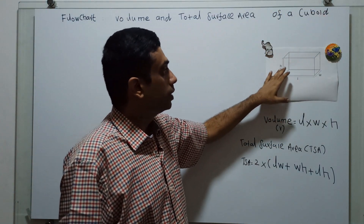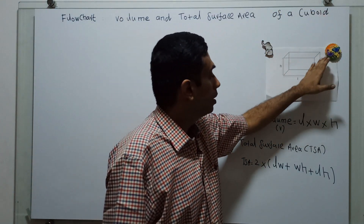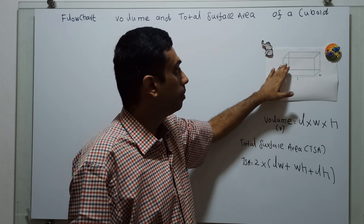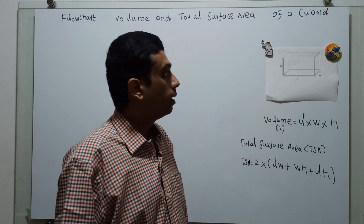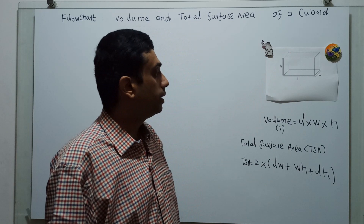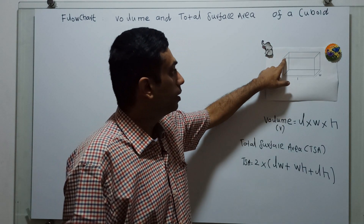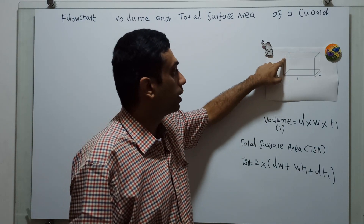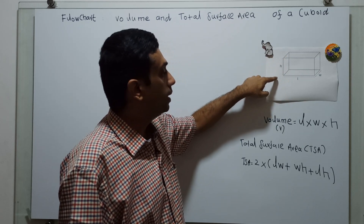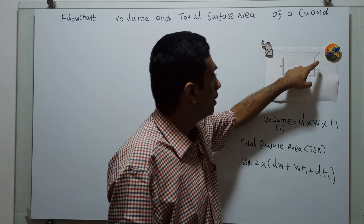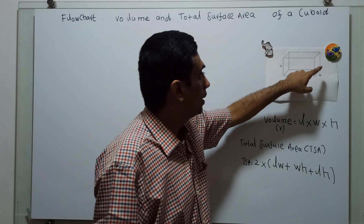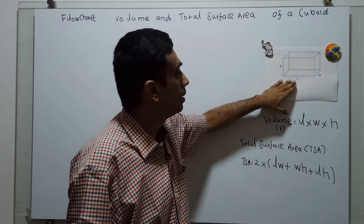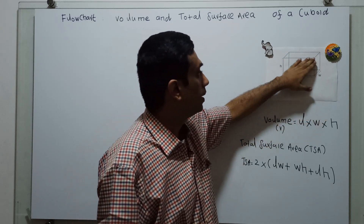A cuboid contains 6 rectangular faces, each meeting the others at 90 degrees. At a particular vertex, 3 faces meet together. Since it has 6 rectangular faces, it has a length, width, and height of different dimensions.